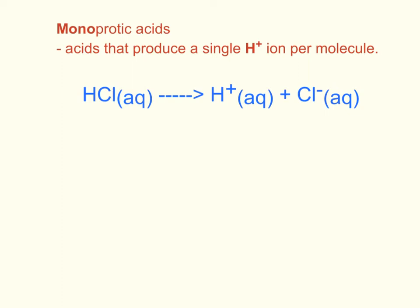Monoprotic acids are the acids that produce a single proton per molecule of acid dissolved in water. Hydrochloric acid (HCl) is a great example — whenever we dissolve HCl in water, every molecule gives off one proton, one hydrogen ion. When we talk about acids, we are mostly concerned with the amount of protons or hydrogen ions given off by the acid in the solution.